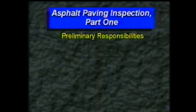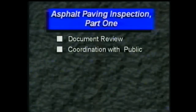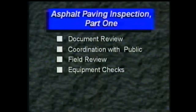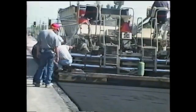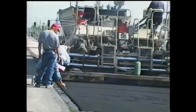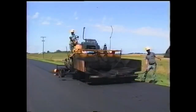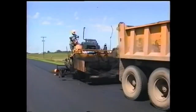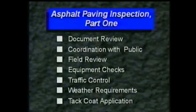Here in part one, we'll look at your responsibilities before paving begins: document review, coordination with the public, field review, equipment checks, traffic control, and weather requirements. Then we'll look at inspecting the tack coat application. Part two covers the paving operation itself. And part three shows some of the problems that can occur with mix quality, lay-down operations, and rolling. So let's get started.